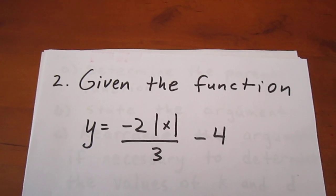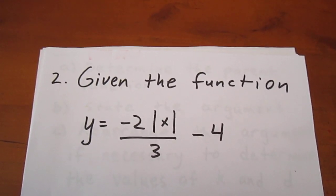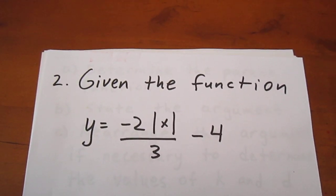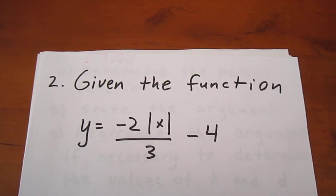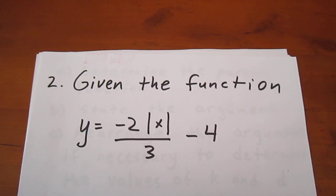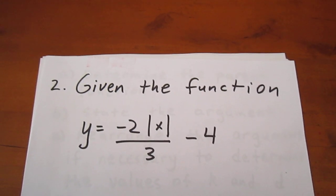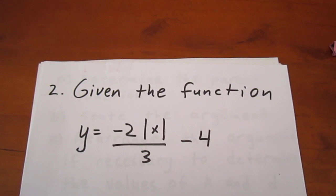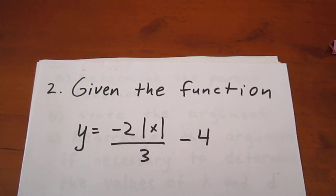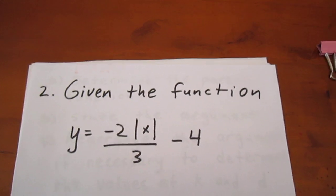For our next task, we are asked to graph the function y equals negative 2 times the absolute value of x, all over 3, and then that quantity minus 4.